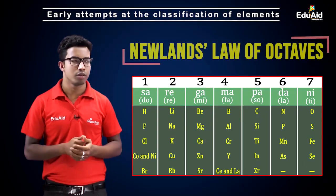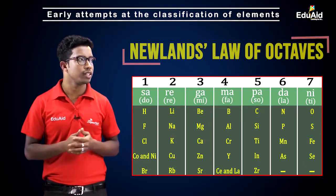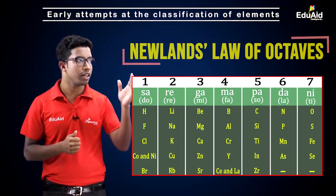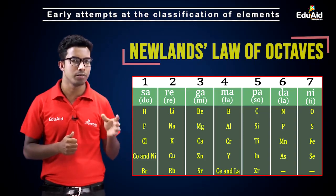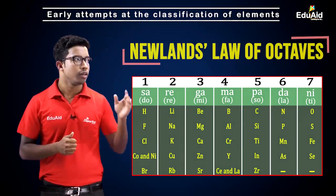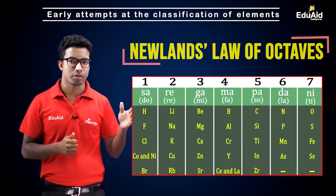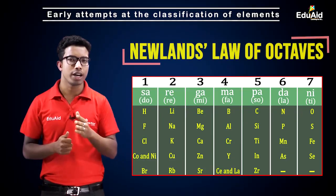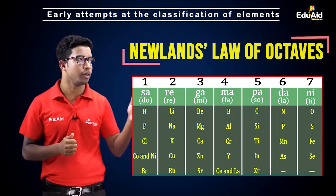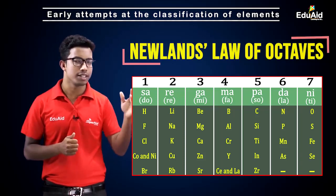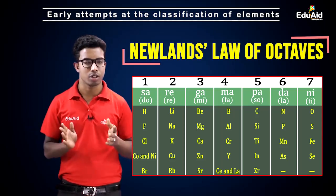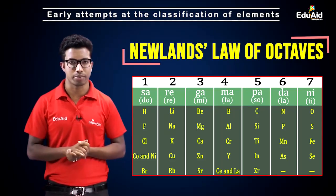Newlands arranged all the elements and presented a table. In this table there are basically seven groups, and in each group the elements with similar properties are placed together. There are seven groups because the gap between one element and the next similar element is seven.